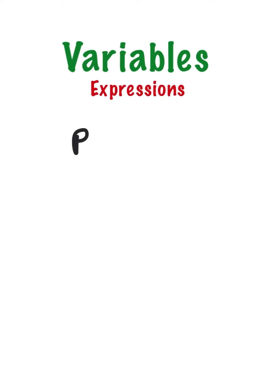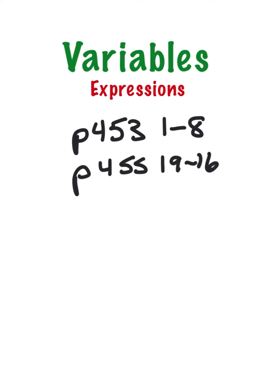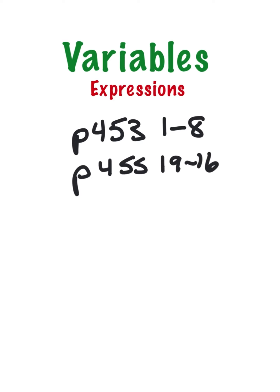Your assignment is on Showbiz: page 453, problems one through eight, and page 455, problems 19 through 16. The questions to answer are circled — make sure you plug and chug. After that, work on your IXLs: Y4 and Y5, which are in sixth grade. They'll give you an expression and tell you what the variable is — you just plug and chug. Once those are done, work on any other IXLs you still need to complete.